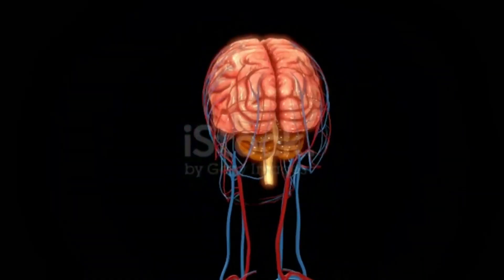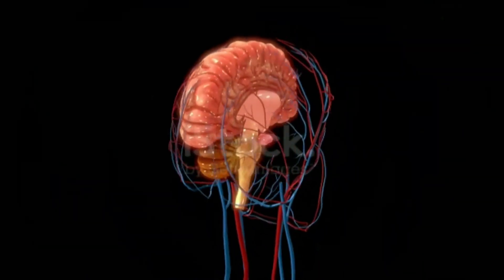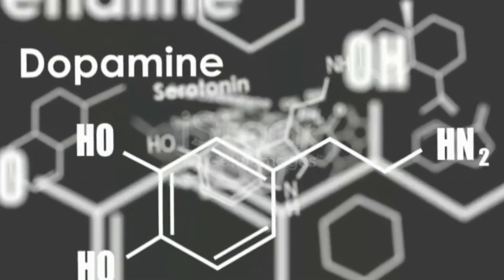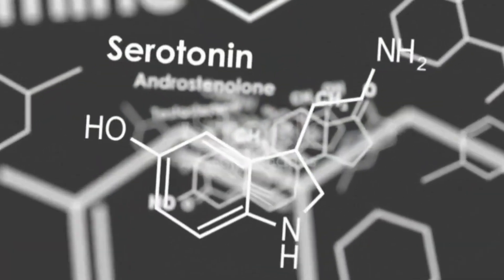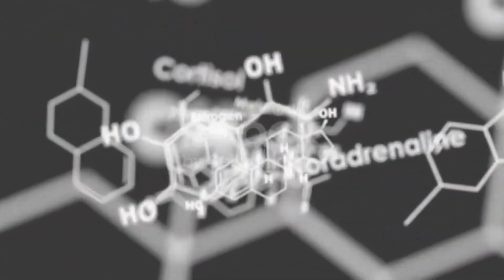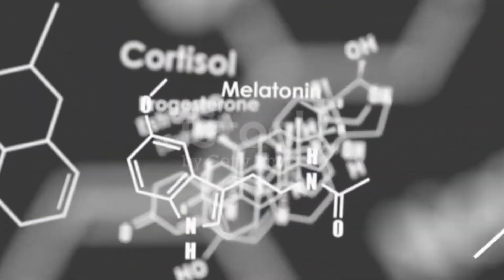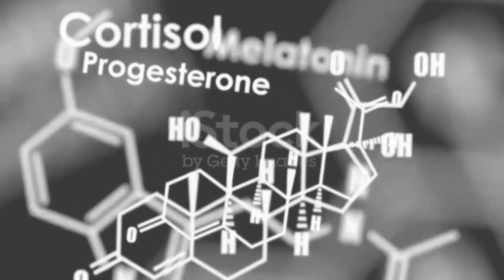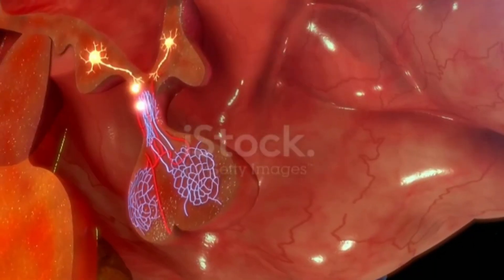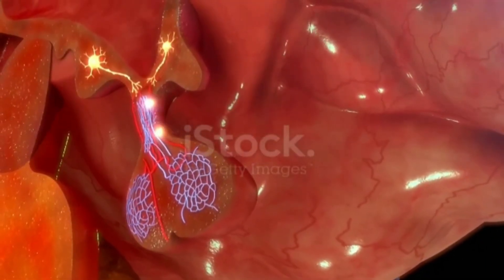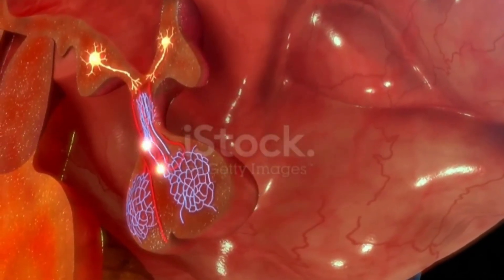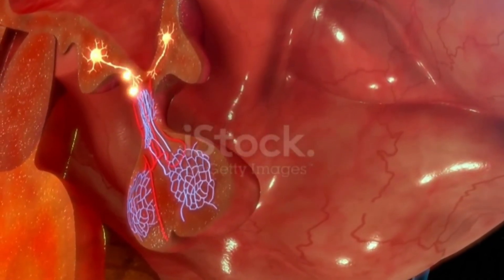The endocrine system is a series of glands that produce and secrete hormones used to regulate various body functions. It also controls many different body functions, such as respiration, metabolism, and reproduction.